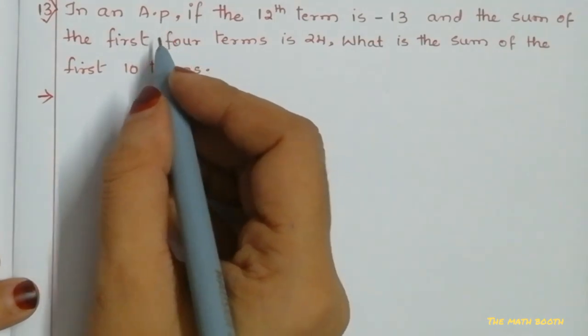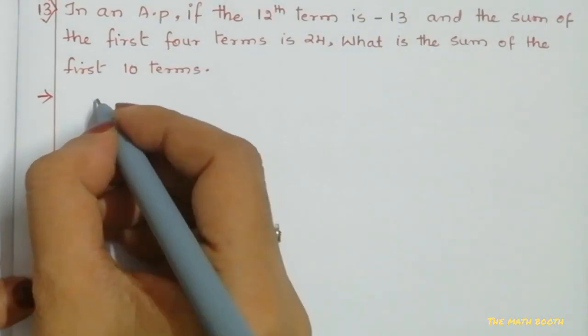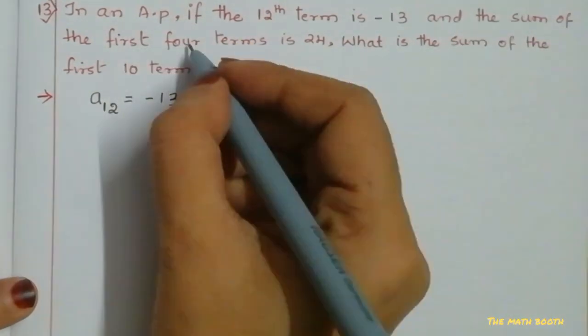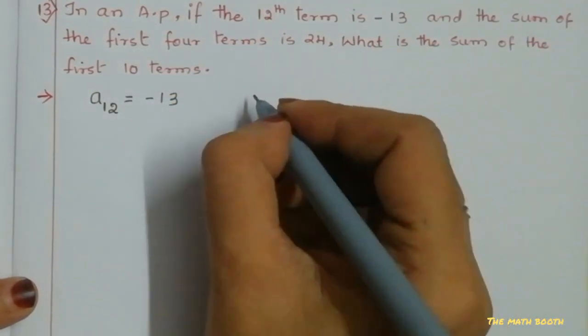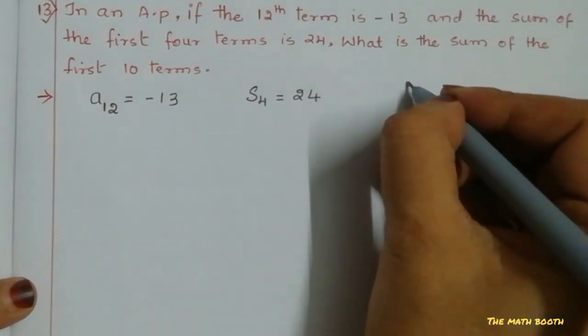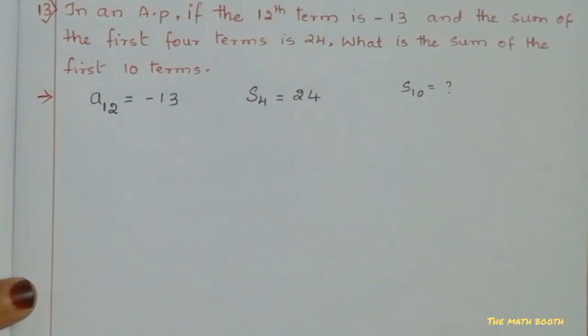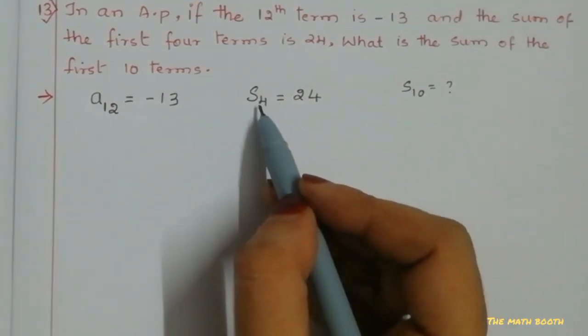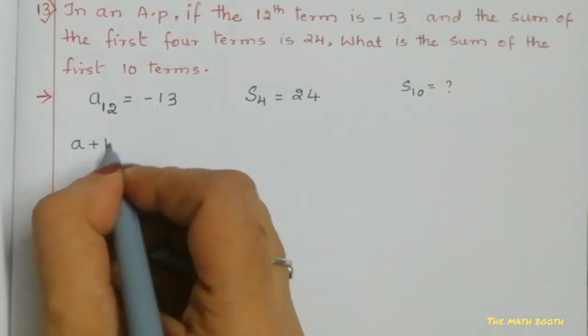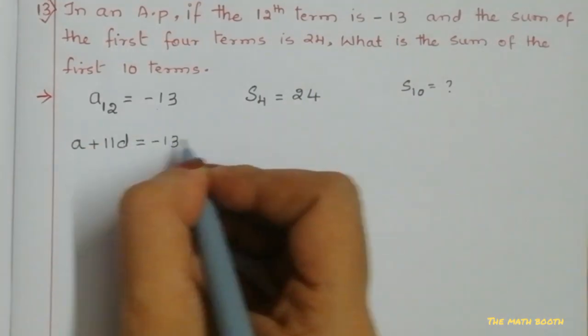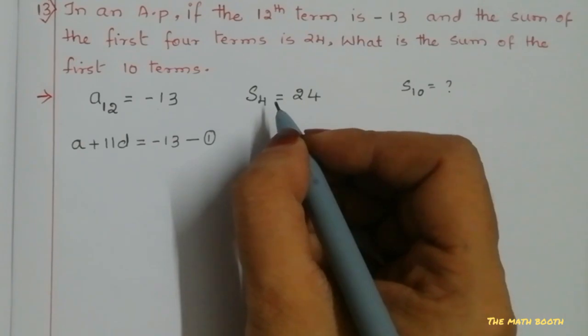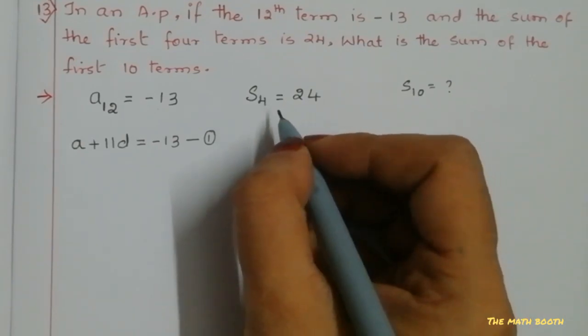So this is the question. Let us frame the question first. What they have given: In an AP, 12th term is -13 and the sum of first 4 terms is 24. What is the sum of first 10 terms? That means S₁₀ we have to find. We all know that a₁₂ is nothing but a + 11d equals -13. We will consider this as equation 1.